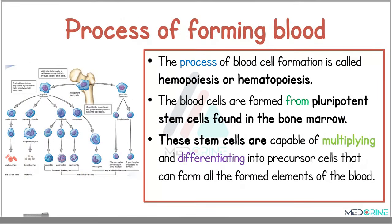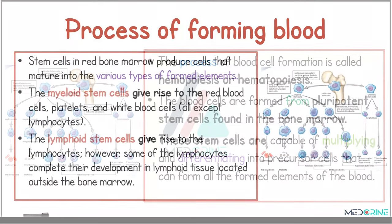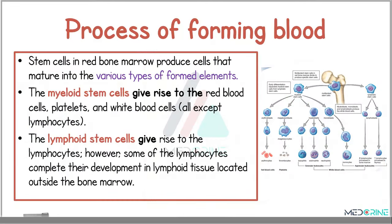The process of blood cell formation is called hemopoiesis or hematopoiesis. These blood cells are formed from what are known as pluripotent stem cells, which are found in the bone marrow. These cells are capable of multiplying and differentiating into precursor cells that can form all the formed elements of the blood. There are two types of stem cells: the myeloid stem cells and the lymphoid stem cells.